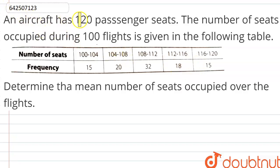Hello everyone. In this question, we are given that an aircraft has 120 passenger seats. The number of seats occupied during 100 flights is given in the following table. We have to determine the mean number of seats occupied over the flights.